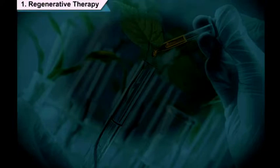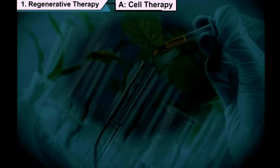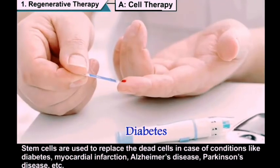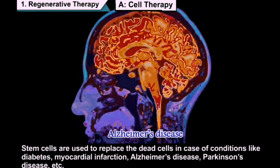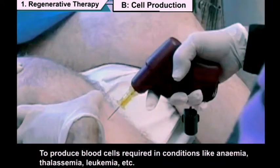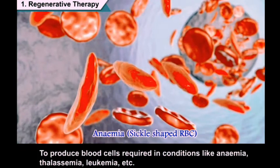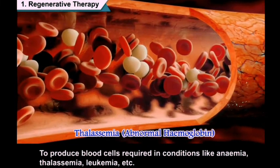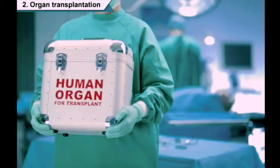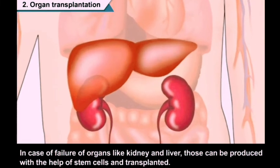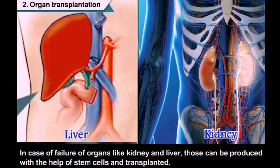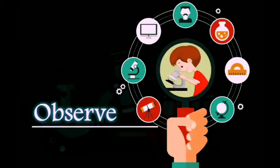Regenerative therapy or cell therapy: stem cells are used to replace dead cells in conditions like diabetes, myocardial infarction, Alzheimer's disease, and Parkinson's disease. They are also used to produce blood cells required in conditions like anemia, thalassemia, and leukemia. In leukemia, the number of WBCs increases. In case of organ failure such as kidney and liver failure, those organs can be produced with the help of stem cells and transplanted.